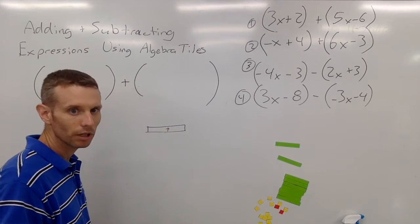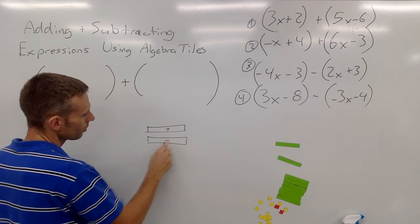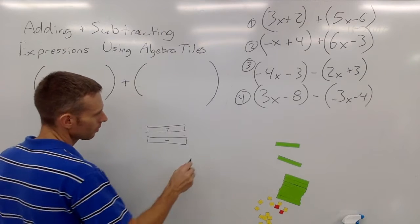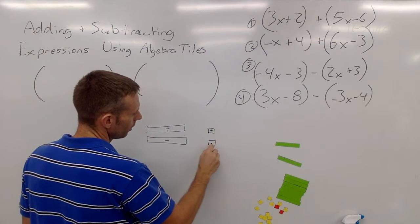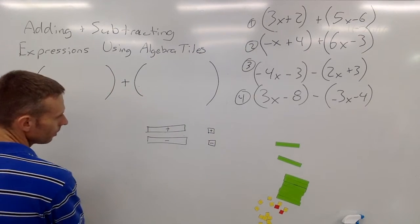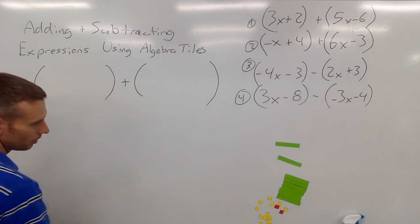Instead of the green, you can just draw a rectangle with a plus. Instead of a red x, you can just draw a rectangle with a negative, and then the small yellow squares can be a positive, and the small red squares can be a negative. So that way you can still copy and follow along, but I'm going to go ahead and use the color tiles.